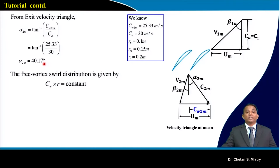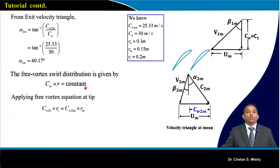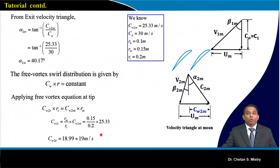For free vortex design, Cw·r = constant. Since Cw2 and radius at mid section are known, we write Cw2_tip × r_tip = Cw2_mid × r_mid to find the constant and apply it across the span. This gives Cw2 at the tip as 19 m/s. Similarly, Cw2 at hub can be calculated from the same constant.